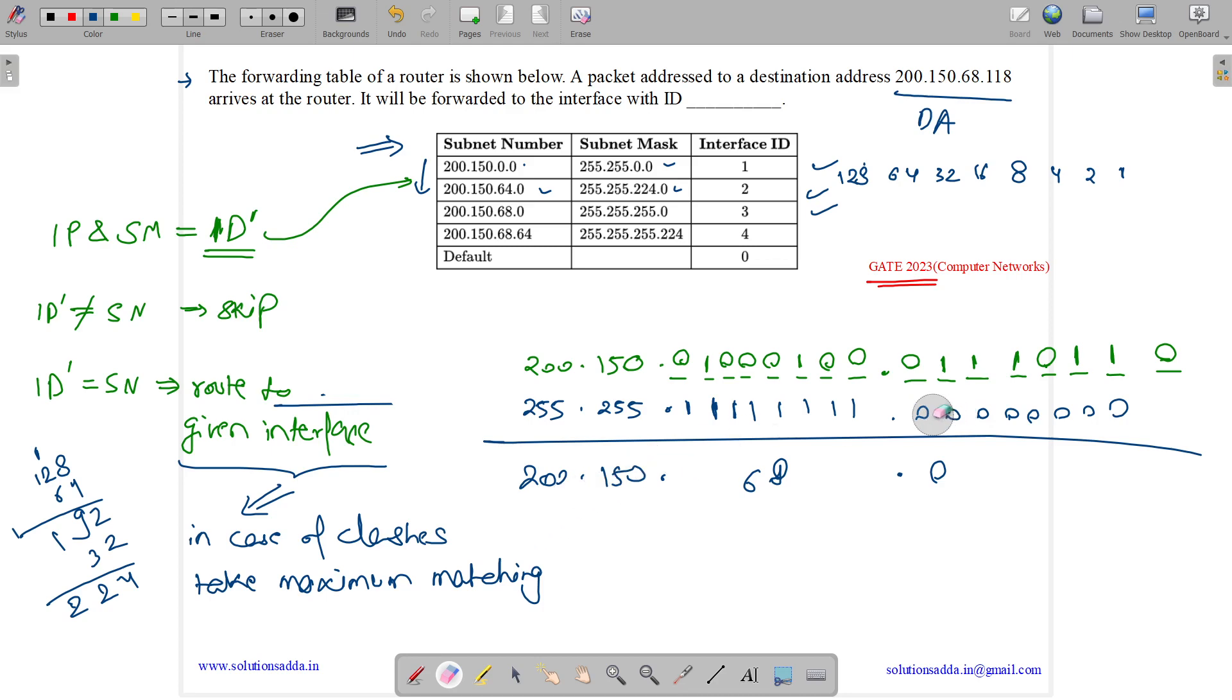Let us see the fourth one. Fourth one is 224. The subnet mask is 255.255.255.224. What is 224? It will have three ones, then all zeros. So here we will have 68. Here we will have 1.0 is 0, 1.1 is 1, 1.1 is 1. Here we will have all zeros. 128, 64 and 32. So this one will match and we will get 200.150.68.96. Whether it is matching or not with this one? No, this is not matching. This is not matching.